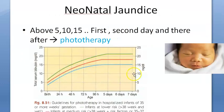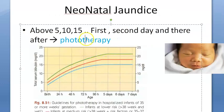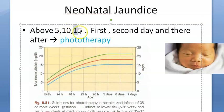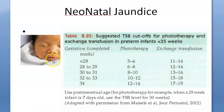What are the cutoffs for phototherapy? On the first day, above 5 milligrams per deciliter bilirubin; second day, above 10 milligrams per deciliter; third day and beyond, if it is greater than 15 milligrams per deciliter in a term baby, then you give phototherapy. For premature neonates the cutoffs are a little less.